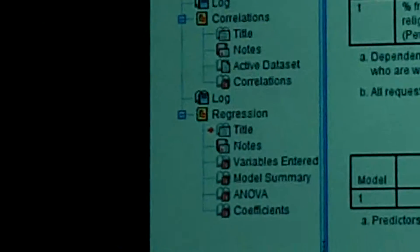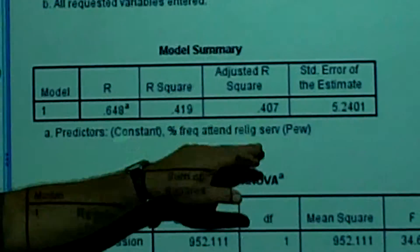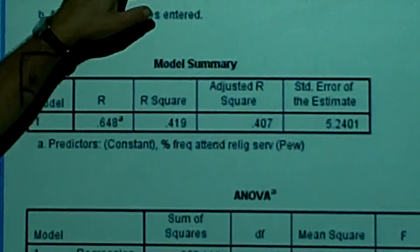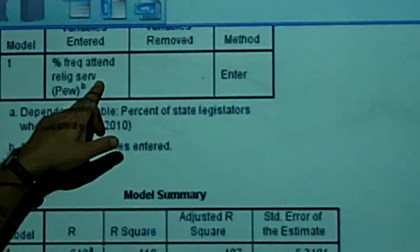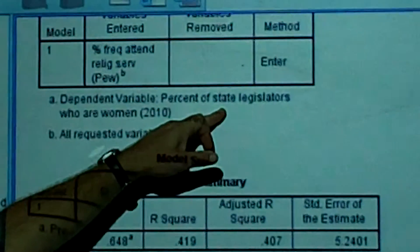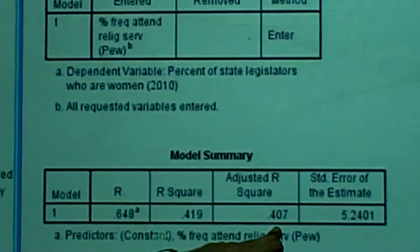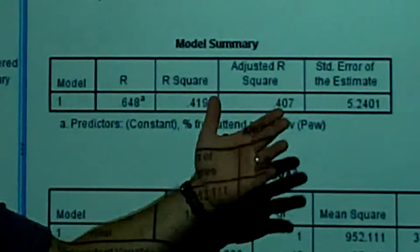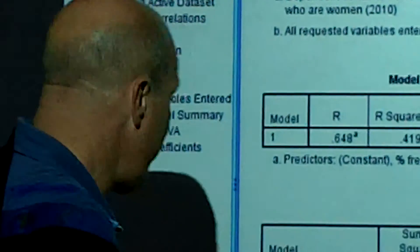This is a proportionate reduction in error measure, which means by knowing how many people in a state attend religious services frequently, we can reduce our error in predicting how many state legislators are women in that state by about 41 percent or 40.7 percent. So that's pretty good, just knowing that one variable.